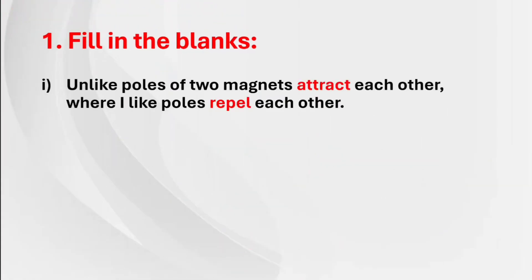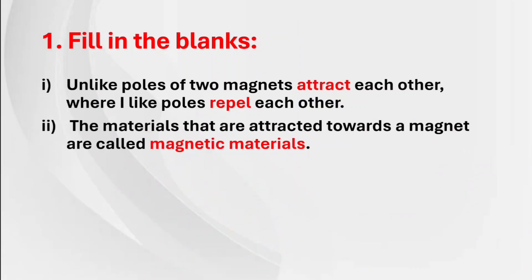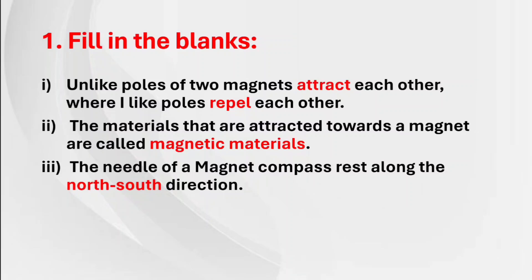First main, first question: fill in the blanks. Unlike poles of two magnets attract each other, whereas like poles repel each other. Answer: attract, repel. The materials that are attracted towards the magnet are called magnetic materials. The needle of a magnet compass rests along the north-south direction.